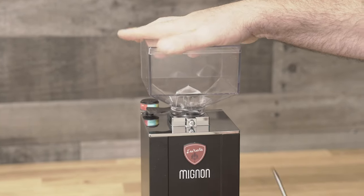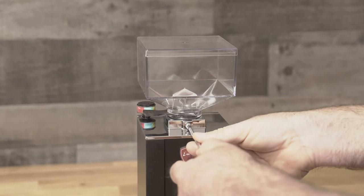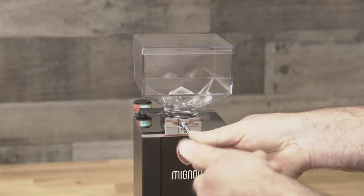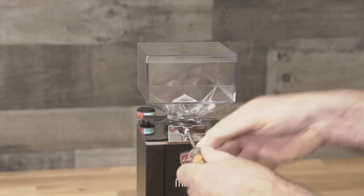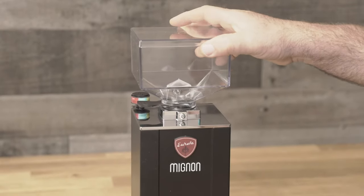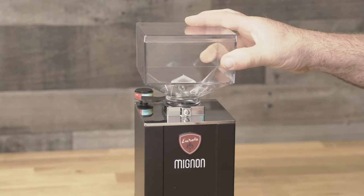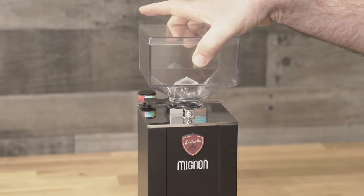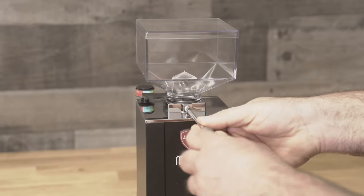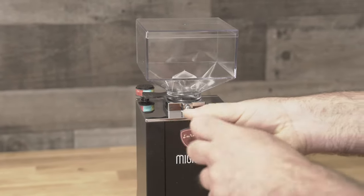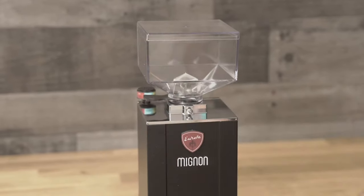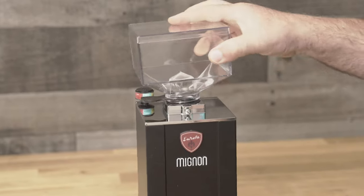What ends up happening is if we put this back in and tighten the screw, the bean hopper is not removable. You see that? I can't lift it out. If I remove the set screw or take it out, and then take the bean hopper off...